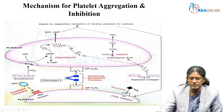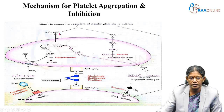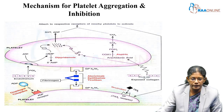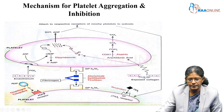COX inhibitors act on thromboxane A2, inhibiting attachment between platelets. The second group, ADP antagonists — such as clopidogrel and ticlopidine — block ADP, which is responsible for platelet adhesion, thereby preventing attachment to other platelets.